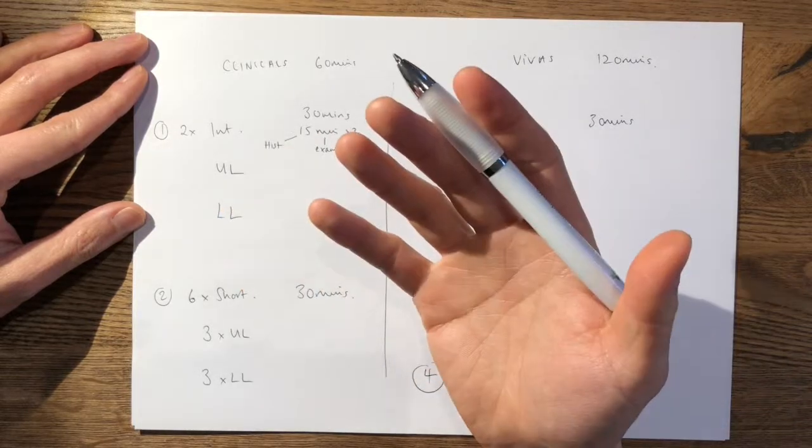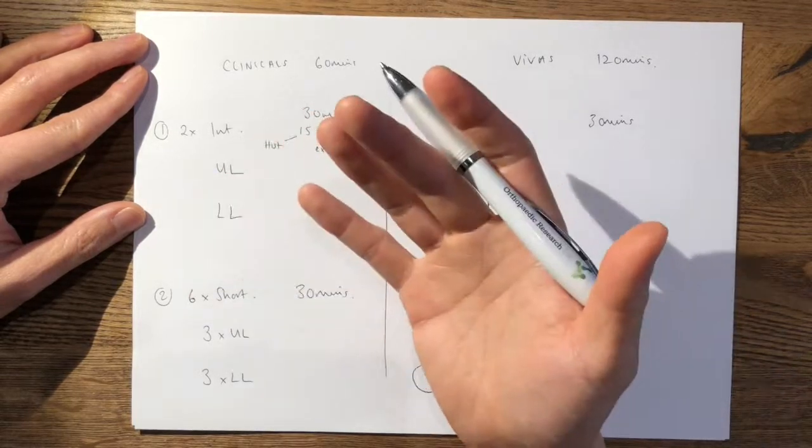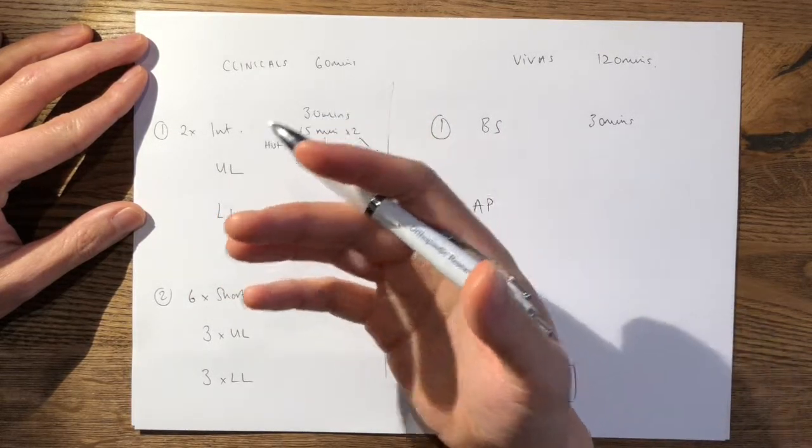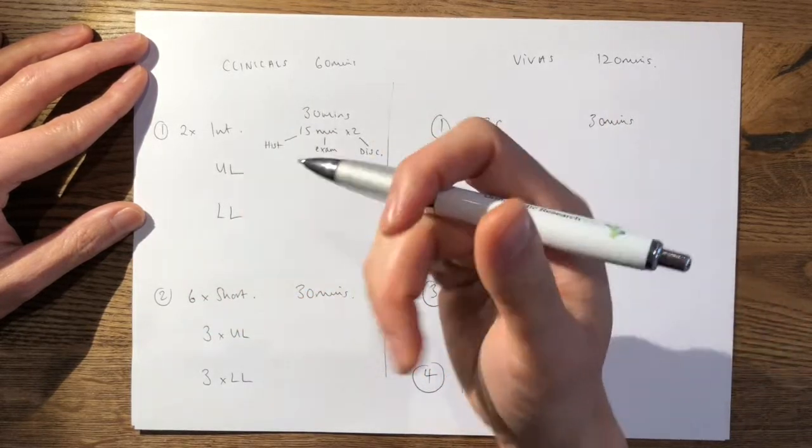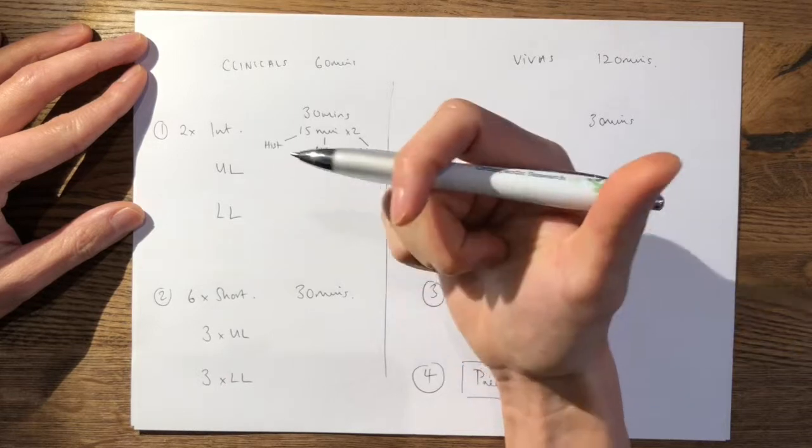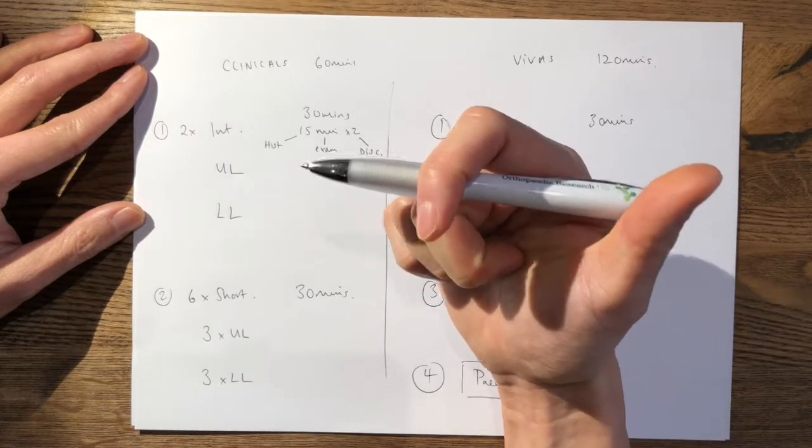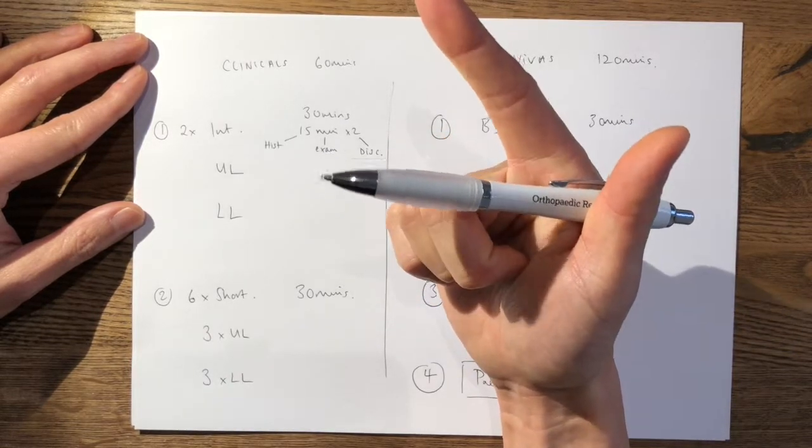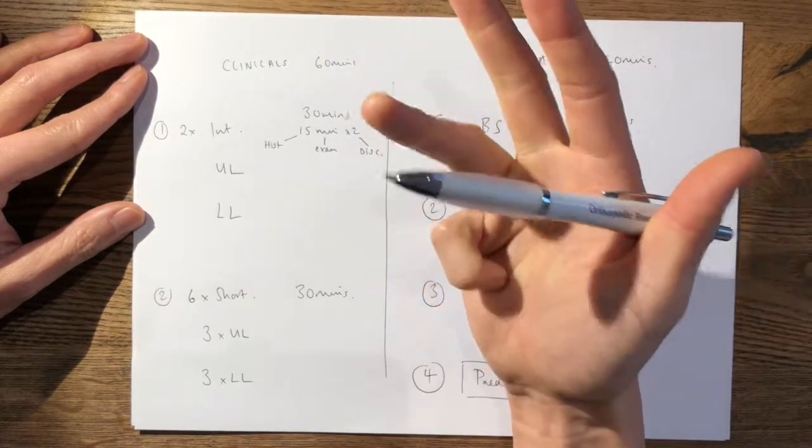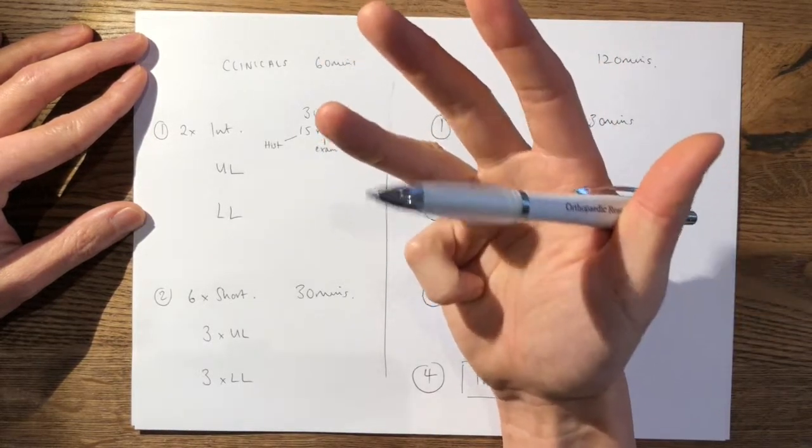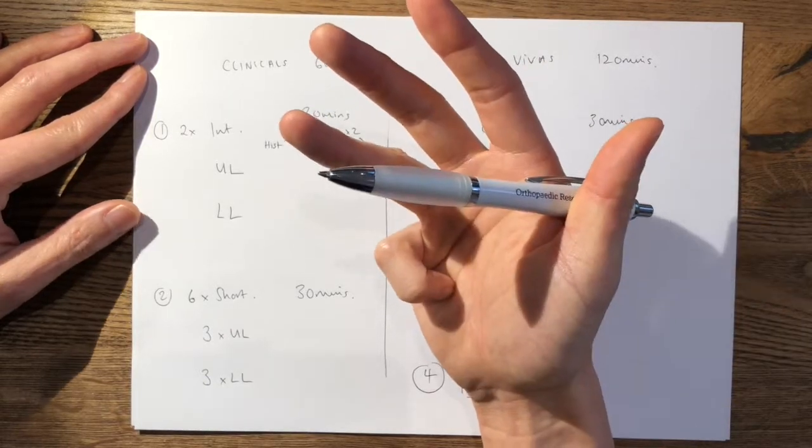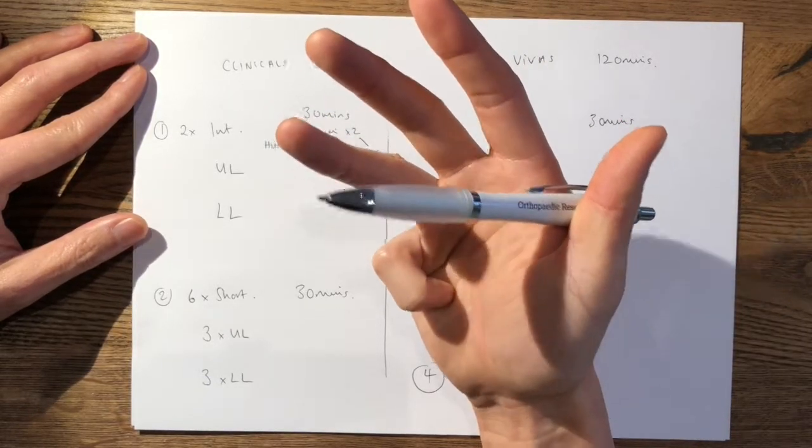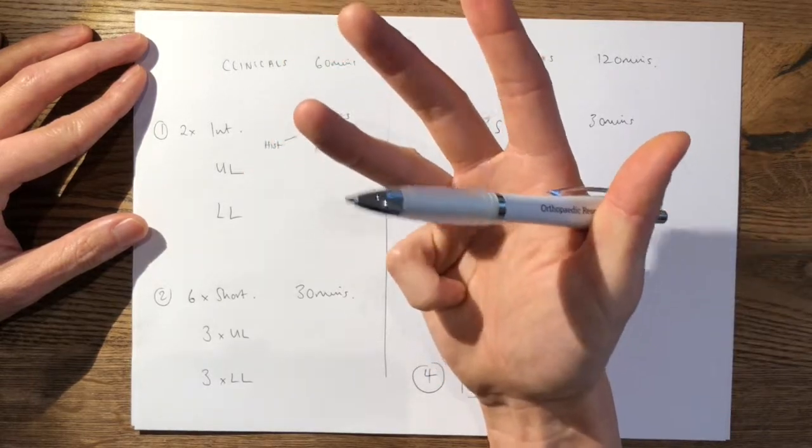Now you have two examiners examining you in each station, and each of them will give you a mark out of eight in four domains for your clinicals. The domains are readily available on the JCIC website, but they are: overall professional capability and patient care, judgment and knowledge, quality of response, and bedside manner. Each of those four domains are marked out of eight.